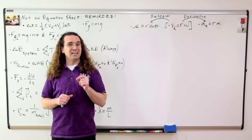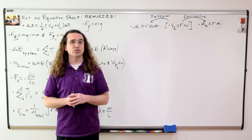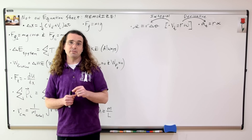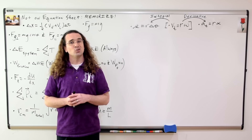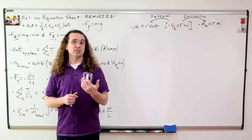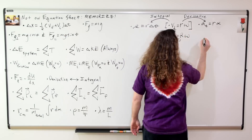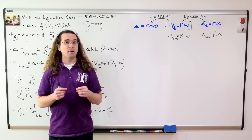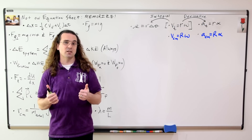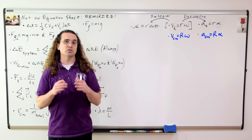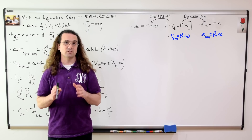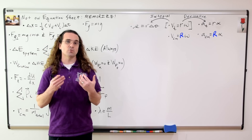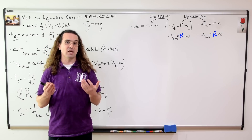When you take the integral of the tangential velocity equation, you get the arc length equation. And when you take the derivative of the tangential velocity equation, you get the tangential acceleration equation. Once you have those three equations, it is easy to remember the equations for the velocity and acceleration of the center of mass of an object which is rolling without slipping. Remember, the R in these equations is capitalized because it is the radius of the object.